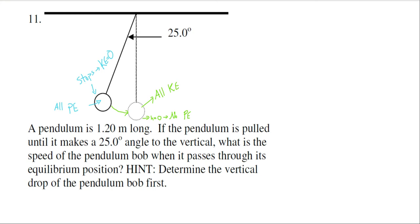I'm going to redraw this situation to give myself more space. We keep in mind that at the top of the swing, all energy is potential energy, and at the bottom, all energy is kinetic energy. Our law of conservation of energy says we lose none of that energy, so the quantities are going to be the same.